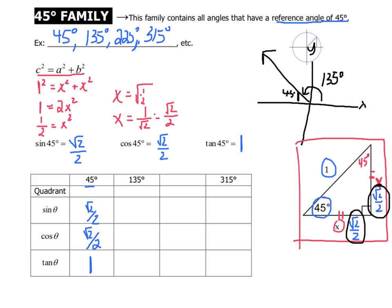We'll note here that this is an angle in the first quadrant. Now, what about all the rest of our angles — what values will they take? We've seen that the 45-degree family will have all the same cosine, sine, and tangent, except we'll have to consider the sign. So let's copy down these same amounts and then worry about the sign.